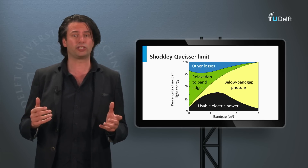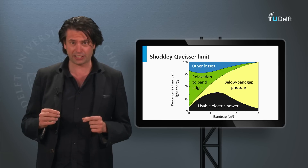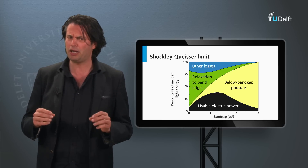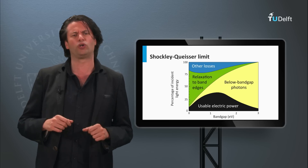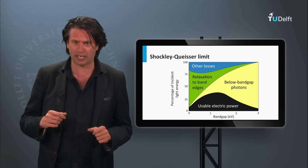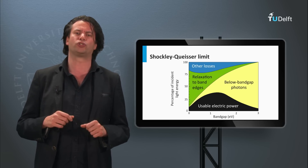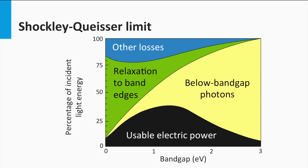As discussed in week 1, third generation technology is technology based on concepts which are able to surpass the so-called Shockley-Queisser limit of a single junction solar cell. The Shockley-Queisser limit, as discussed in week 3, is a thermodynamic approach to estimate the maximum performance of a single junction solar cell. The AM1.5 spectrum is incident on a solar cell.